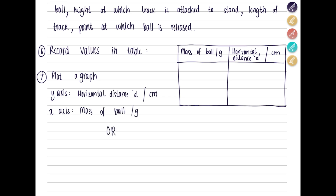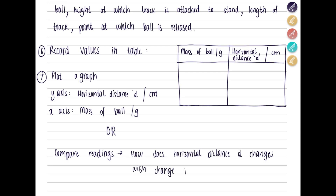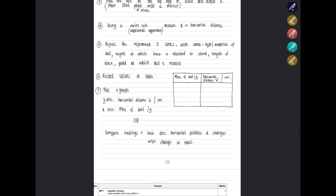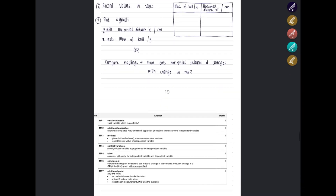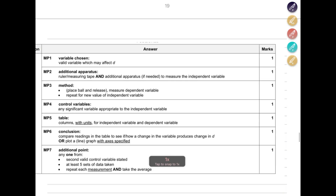Another way to reach a conclusion is to compare the readings in the table — observe how the horizontal distance changes with the change in mass. You can also refer to the marking scheme. Now we can move on to the next question.